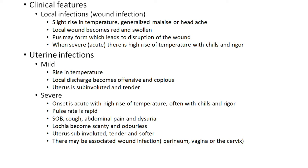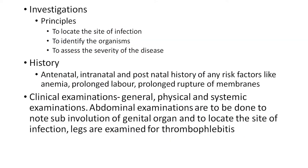In severe uterine infection, onset is acute with a high rise of temperature, often with chills and rigor. Pulse rate is rapid, with shortness of breath, cough, abdominal pain, and dysuria. Lochia becomes scanty and odorless, and the uterus is sub-involuted, tender, and soft. Associated wound infections of the perineum, vagina, or cervix may also be present.